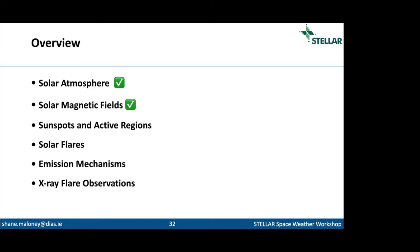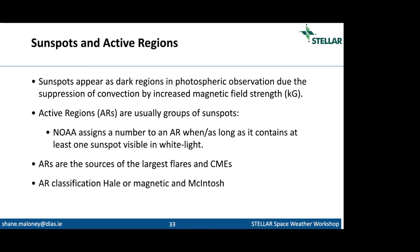The most important facts: the dynamo powers the solar cycle and also powers space weather events. Moving on to sunspots and active regions — sunspots were first viewed in visible light and appear as dark regions on the surface of the sun. Active regions are generally groups of sunspots. NOAA — the National Oceanic and Atmospheric Administration — assigns active region numbers as soon as there's at least one spot in a group. Generally active regions have more than one sunspot, and it's these active regions that are the source of the largest flares and CMEs.